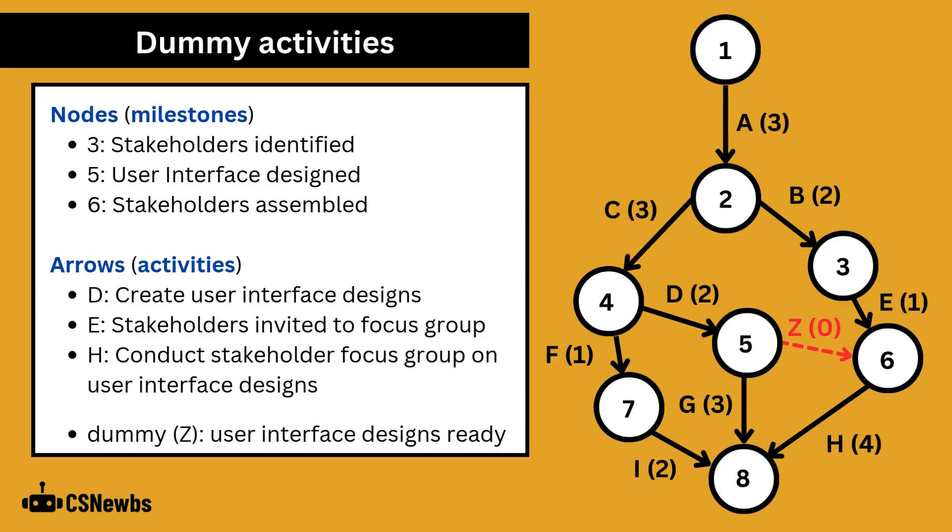The concept of dummy activities can be confusing and they may not appear in all arrow diagrams so you may not be asked about them in an exam but let's look at them just in case. There's a dummy activity in this example between node 5 and node 6 that I've labelled Z just to point it out.